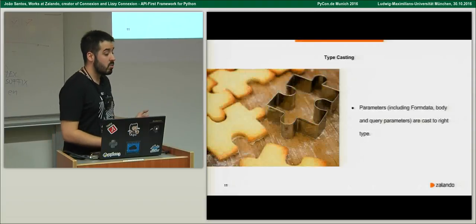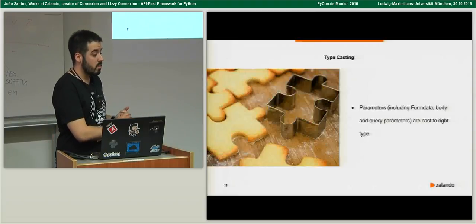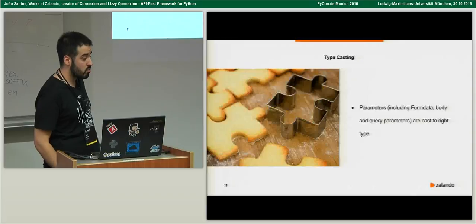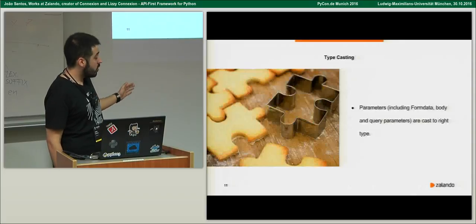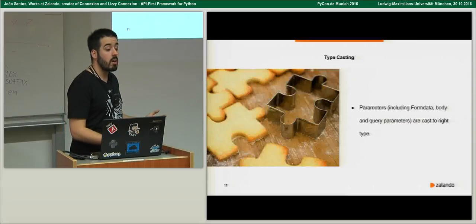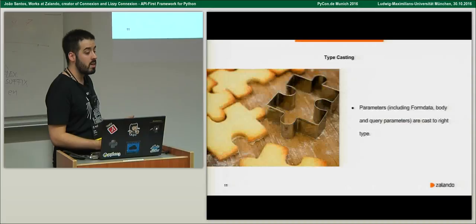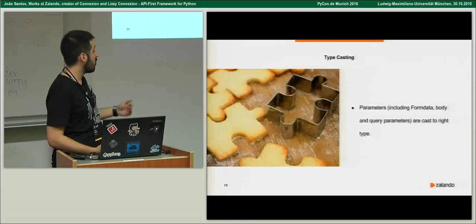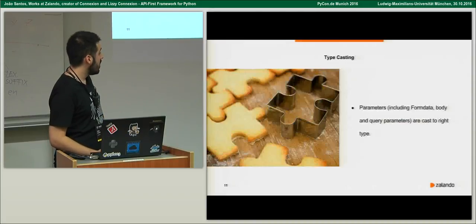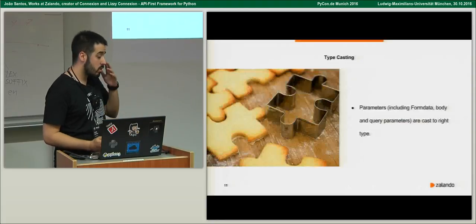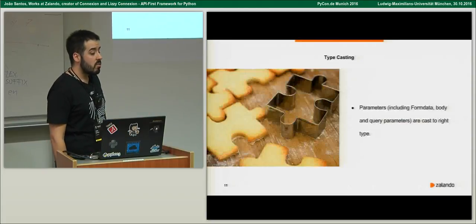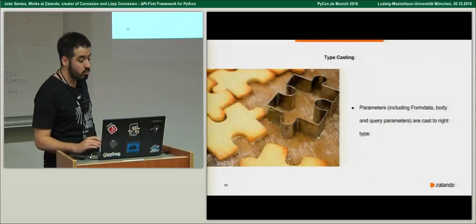For typecasting: if you say you want to receive an integer as a query parameter, you will get an integer — not like Flask where you get a string and have to cast it yourself. The same applies to form data or body parameters. If you expect a number in OpenAPI, you get a float in Python; if you expect an integer, you get an integer; if you have an array in OpenAPI, you get a list in Python — if it's one of the supported formats.